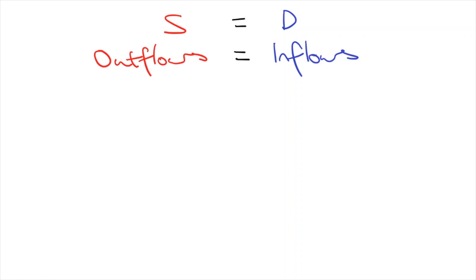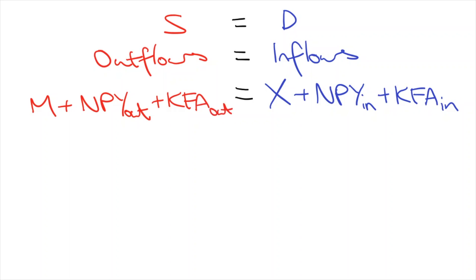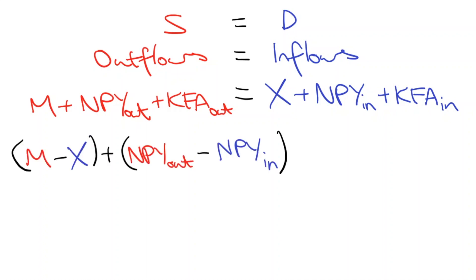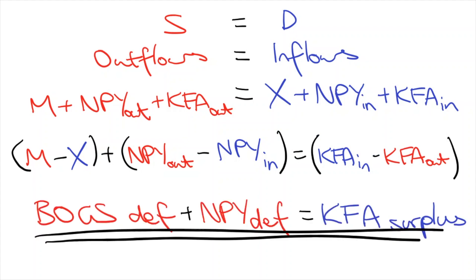If you expand these components, inflows include export revenue going into BOGS, returns on investments going into NPY, and investment inflows going into KFA. Outflows include import spending from BOGS, interest and dividends going out through NPY, and investment outflows from KFA. We can rearrange this equation so that all components that make up the current account deficit go on the left and the KFA surplus components on the right. Looking at the final equation, we have proven that the current account deficit is equal to the KFA surplus.